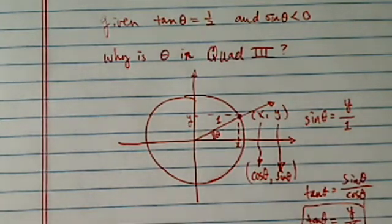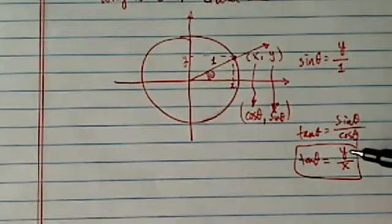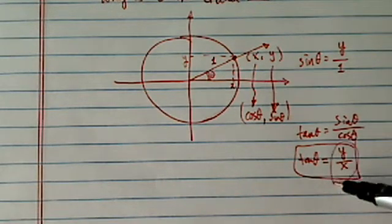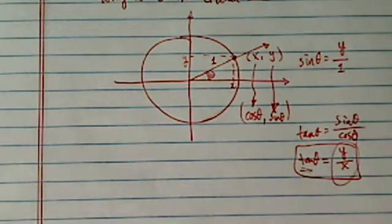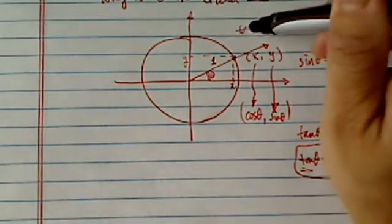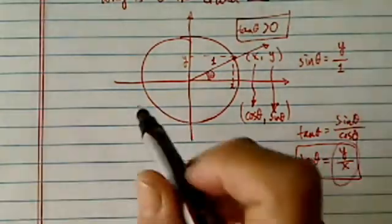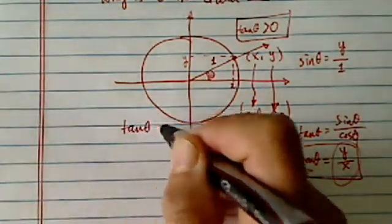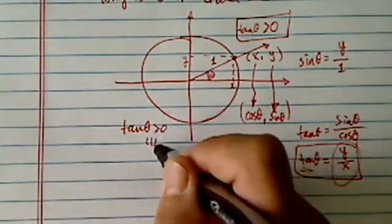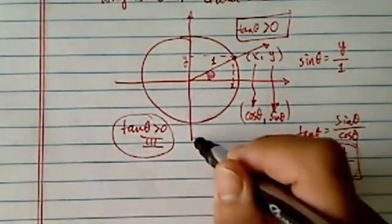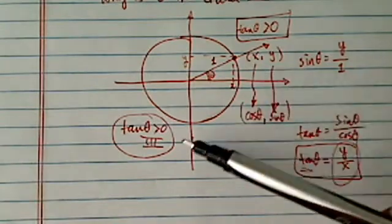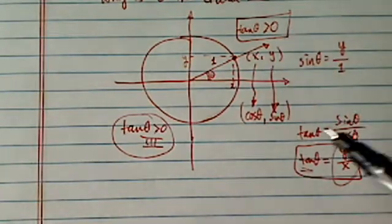So when the coordinates for y and x are the same sign, then tangent theta, the value, becomes positive. Using that definition, tangent theta is positive in quadrant one, and tangent theta is positive in quadrant three. So without further clues, we can't tell where theta is, really.